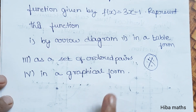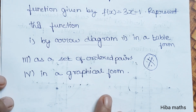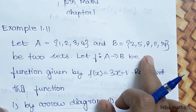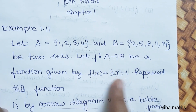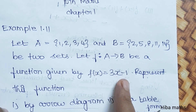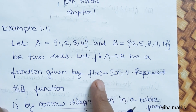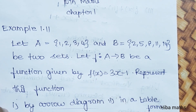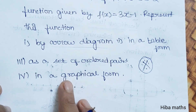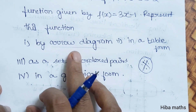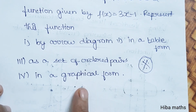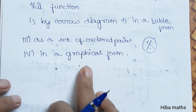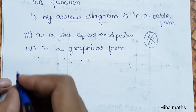So if you have a 5-mark question, we go from set A to B. F of X is the main question. For 5 marks, you will solve: arrow diagram, table form, set of ordered pairs, and graphical form. We will solve them one by one.